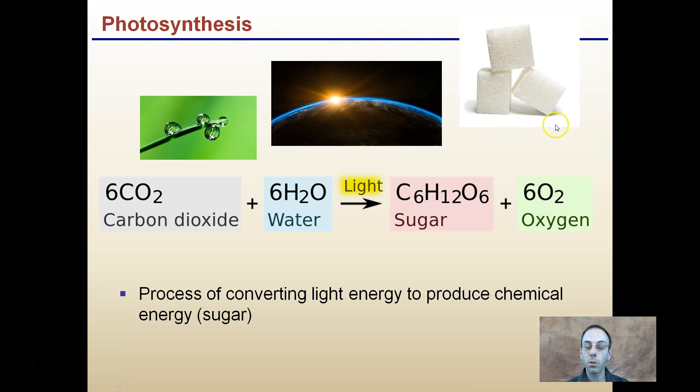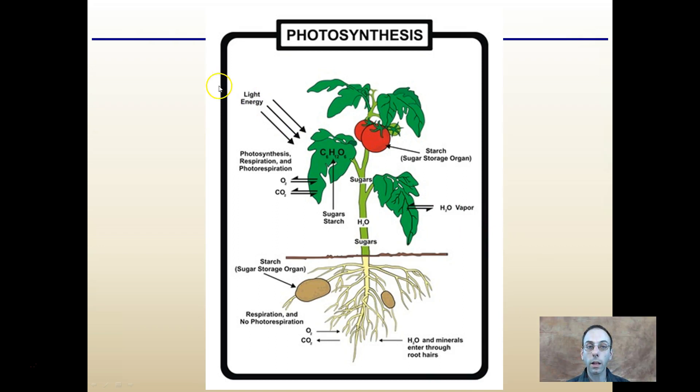Photosynthesis is the capture of light energy. We notice that it can go through and form starch or sugar storage organs — in the sense of our tubers — and it can be used for starch, which is sugar storage in an organ such as a tomato. There are a lot of things going on here, and this is how the source-sink relationship plays into the plant — it's not just going from one area to another; there are a lot of factors in play.